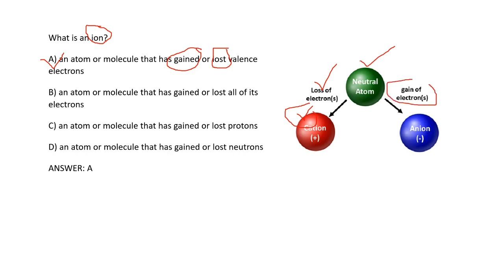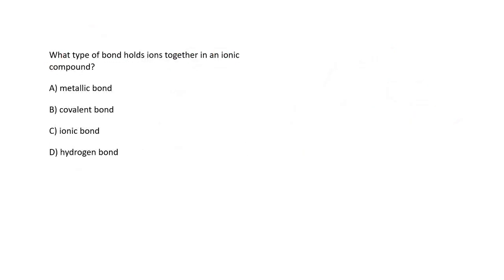If one atom loses electrons to another atom, then the number of electrons becomes less than the number of protons, so it converts to a cation, a positive charge atom. When electrons are gained, the number of electrons exceeds the number of protons, converting it to an anion, a negative charge atom. That is why positive charge atoms are called cations and negative charge atoms are called anions.